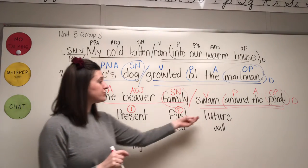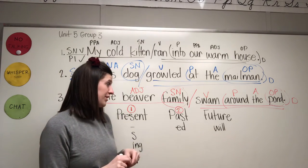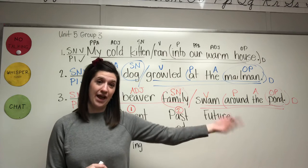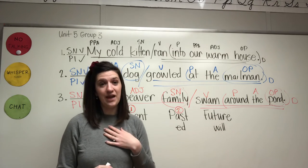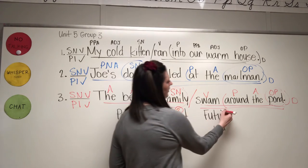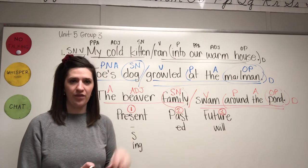And then future tense is the easiest one to find and to solve because it always has the word will in it. I will play outside. I haven't done it yet, but I will sometime in the future. And you'll label your future tense verbs with a three. Good luck.